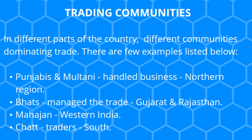Moving on to trading communities: in different parts of the country, different communities dominated trade. For example, Punjabis and Multanis handled business in the northern region. Bhats managed trade in Gujarat and Rajasthan. Mahajans handled the business of western India. Chhat traders handled the business of the south.